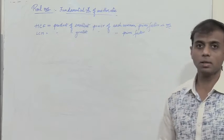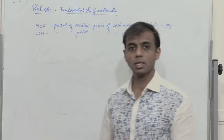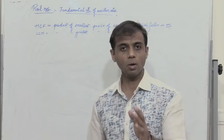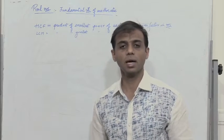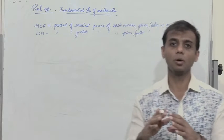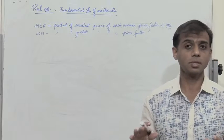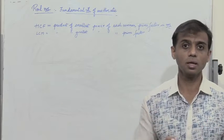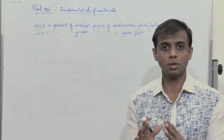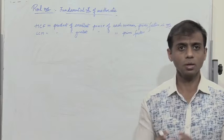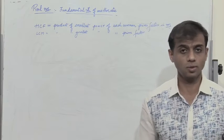The fundamental theorem of arithmetic states that any composite number can be represented as a product of prime numbers, and this representation is unique. We need not be bothered about the order — the order may vary, but the representation is unique.